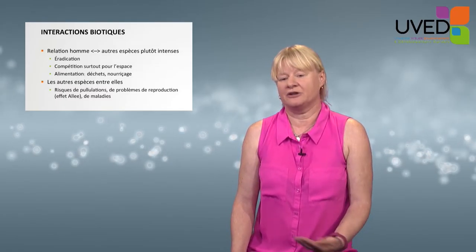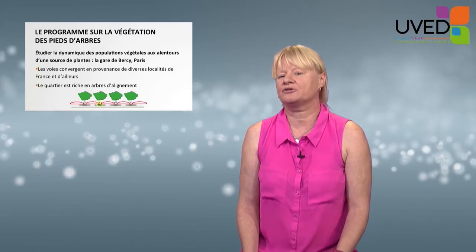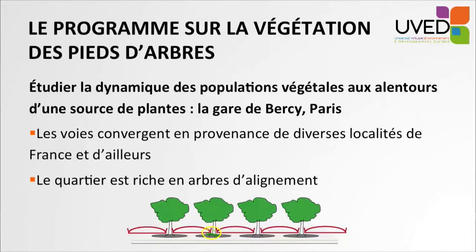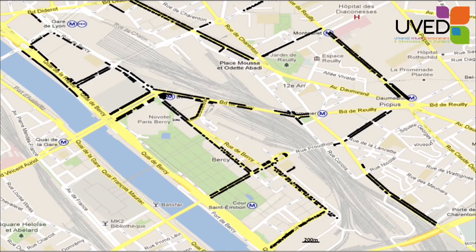But there might be a risk of outbreak or a problem of reproduction when the species are not numerous enough. There is a program regarding plants at the bottom of street trees. We wanted to understand the presence of vegetation around the train station of Bercy, because trains can bring seeds from many regions in France, disseminating them from the station through the other blocks around. The Bercy station area is very rich in street trees with bottoms that may receive seeds from species coming from all over France. We studied 1,500 trees in the area, which belong to the 100,000 trees that can be found in Paris. We analyzed the flora at the bottom of those 1,500 trees every year since 2009.